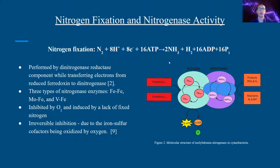Nitrogenase is a metalloenzyme that can use three different ions depending on their availability within the environment. All types of enzymes rely on pairing with an iron ion. These three cofactors are iron-iron, molybdenum-iron, and vanadium-iron.